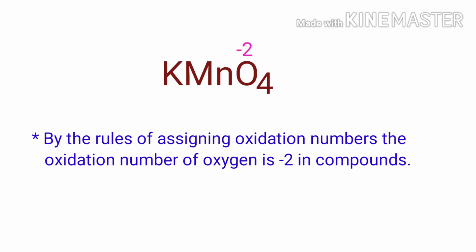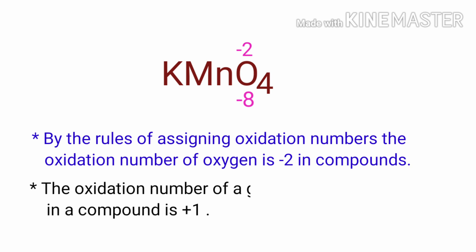We can write the oxidation number of the element above its symbol and the total number of the oxidation number of the atoms below its symbol. The oxidation number of a group 1 element in a compound is plus 1. Potassium is a group 1 element, so the oxidation number of potassium is plus 1.